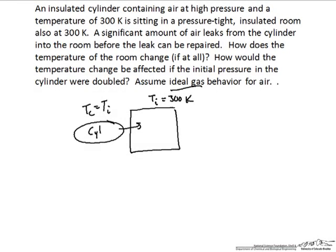Let's take a look at an example problem from a recent exam. We have an insulated cylinder containing air at high pressure, shown on the left as an oval. The temperature of the air in that cylinder is 300 Kelvin. The temperature inside the room is also 300 Kelvin. It's a pressure-tight room, so we can have an increase in pressure inside. It's also an insulated room, so we don't expect any heat transfer or conduction effects. There is some kind of leak from the cylinder into the room, and we want to analyze what happens to the final temperature in the room.